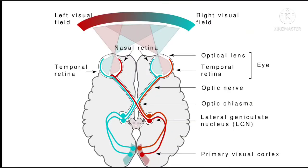Yeh jo red aur sea green color ki visual field dikh rahi hai, yeh humari entire visual field hai, jitna humari aankhein dekh sakti hai. Ab agar dono eyeballs is visual field ke center mein focus karti hai to yeh puri visual field ko dekh pahengi. Ab left visual field se light rays eyes ki or aayengi, to left eyeball ki right side ko hit karengi — yeh hum keh sakte hai left eyeball ki inner side ya nasal side ko hit karengi. Isi prakar yeh rays right eyeball ki bhi right side ko hi hit karengi, yani right eyeball ki outer side ya temporal side ko hit karengi.